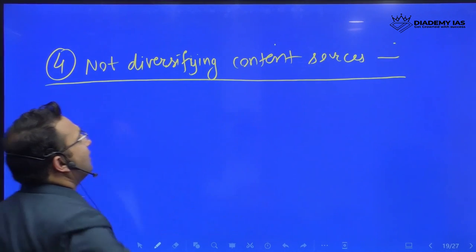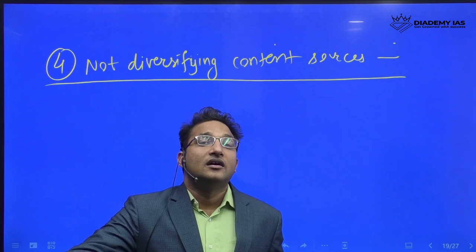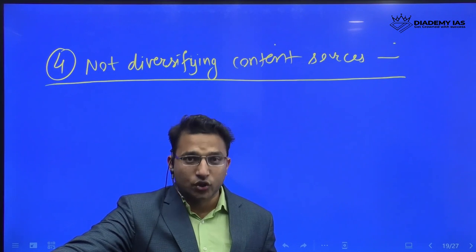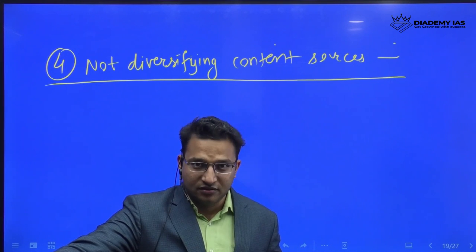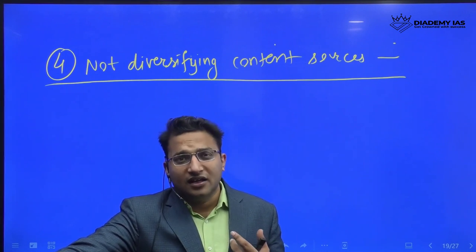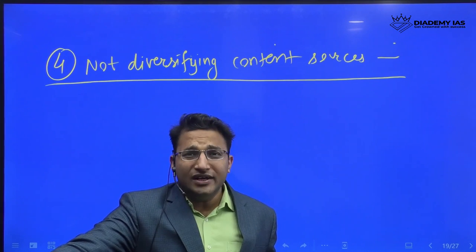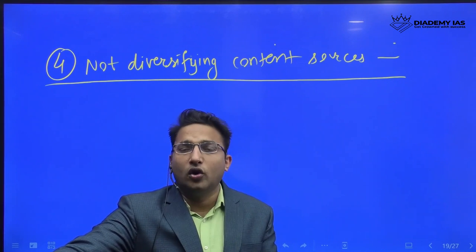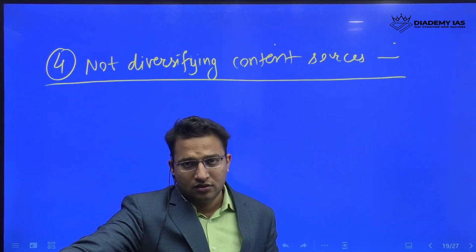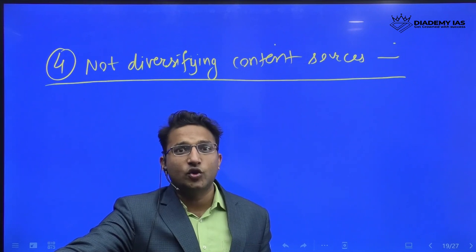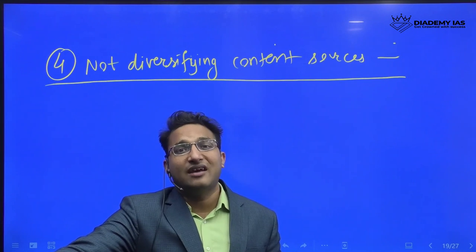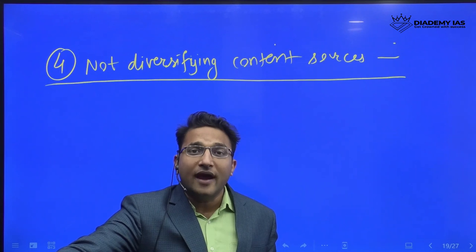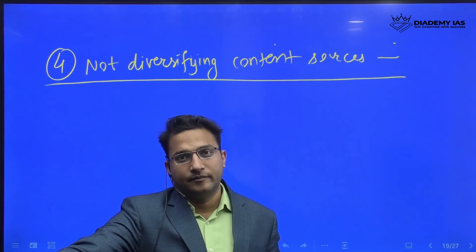Next mistake: not diversifying the content sources. This is a major problem and the source of all the problems you are facing in paper two. We are still using some outdated sources — one or two thinkers' books, which is not enough. OB, HRM, and IR are very evolving fields. There are a lot of MBA colleges giving very good content on this. Why should we stick only to Singhan Chhabda? It is a good book, no doubt, but it is no more than an NCRT of GS now. From NCRT, you cannot clear the exam. You have to use the latest examples, latest diagrams, latest ideas, diversified ideas. You don't have to entirely change — just change 20 to 30 percent of your content.